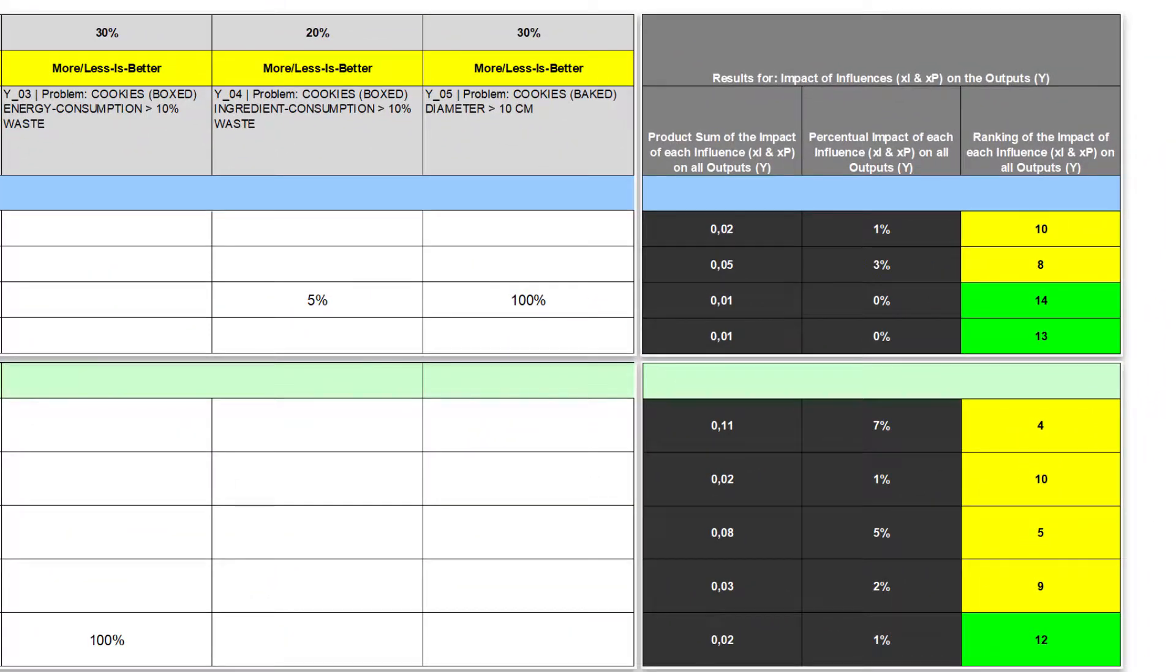The last three columns of the matrix show the overall effect of each influence on all problems. In the third last column, the product sum is calculated for each influence: frequency of the influence, times severity of the problem, times the strength of the relationship between influence and problem. In the penultimate column, the product sum is transformed into the percentual impact of each influence on all problems. And the last column shows the impact ranking for all influences. Here you can distinguish between the highly relevant and less relevant influences.